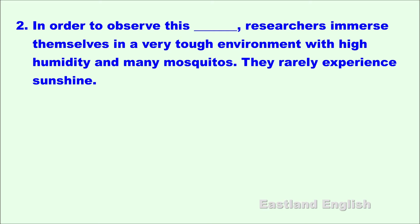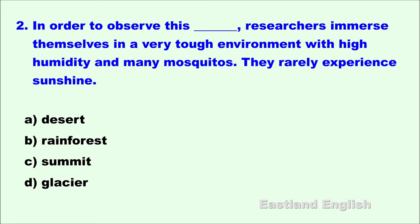Number two. In order to observe this blank, researchers immerse themselves in a very tough environment with high humidity and many mosquitoes — they rarely experience sunshine. A. Desert. B. Rainforest. C. Summit. D. Glacier.